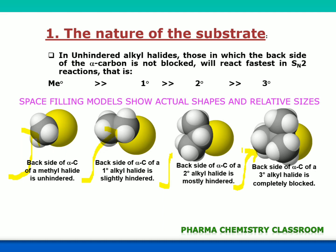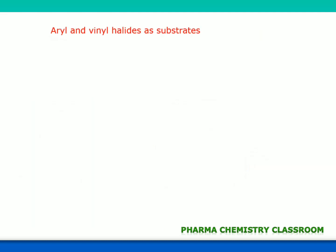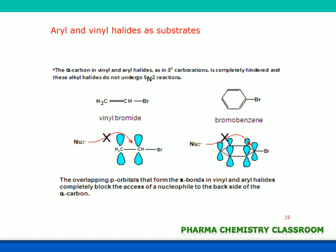Now we will see how aryl and vinyl halides behave as substrates. This is vinyl bromide — a vinyl halide — and this is bromobenzene — an aryl halide. Since there is a pi bond present, the p orbitals of the carbons forming the pi bond completely block the entry of the nucleophile. Therefore, the overlapping of p orbitals forming the pi bond in vinyl and aryl halides completely blocks access of the nucleophile, making SN2 reaction almost impossible for vinyl and aryl halides.